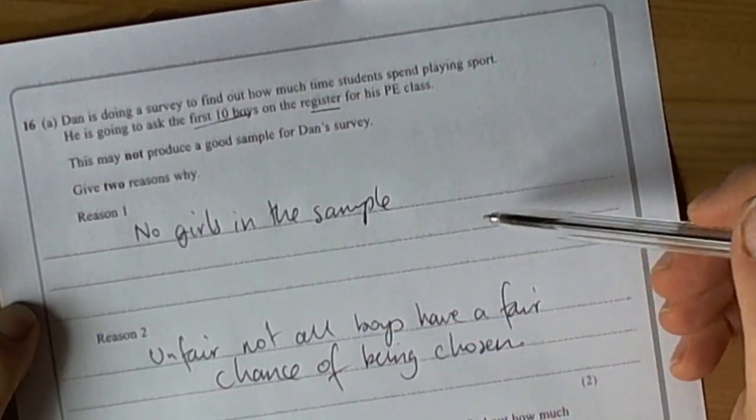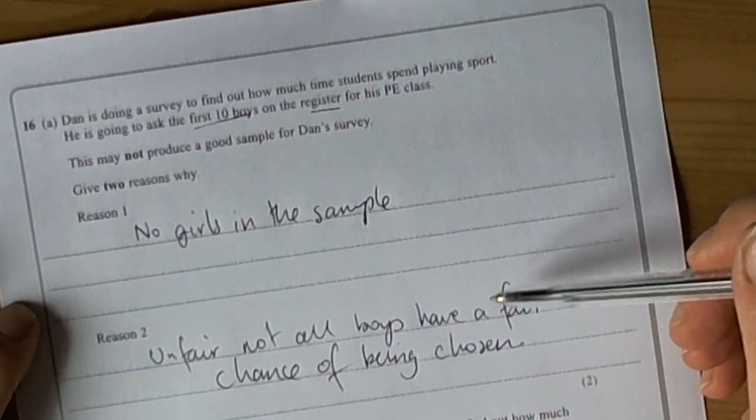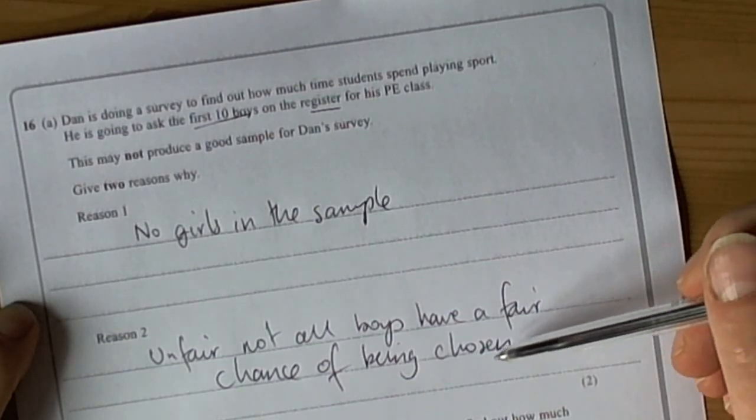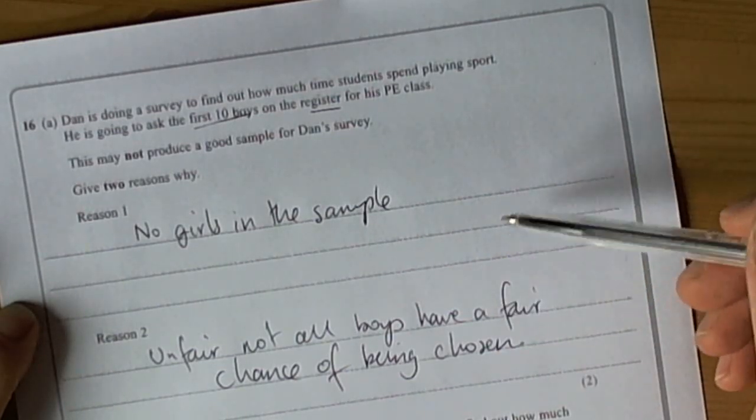When you're doing surveys and things like that, at the foundation level, it's pretty often a random sample would be the fairest way to do it. Because that gives every person in the population a fair chance of being chosen.